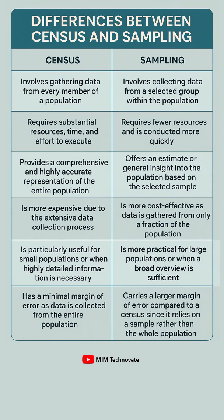Census has a minimal margin of error as data is collected from the entire population. Whereas sampling carries a larger margin of error compared to a census, since it relies on a sample rather than the whole population.